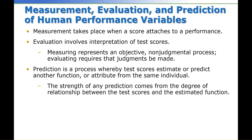Measurement takes place when a quantitative score is attached to a performance. Evaluation involves interpretation of those test scores. Measuring represents an objective, nonjudgmental process, while evaluating requires that judgments be made. So you measure something and then you evaluate it based on what has been measured. Prediction is a process whereby test scores estimate or predict another function or attribute from the same individual — you predict something based on what you've seen. The strength of any prediction comes from the degree of relationship between the test score or scores and the estimated function.